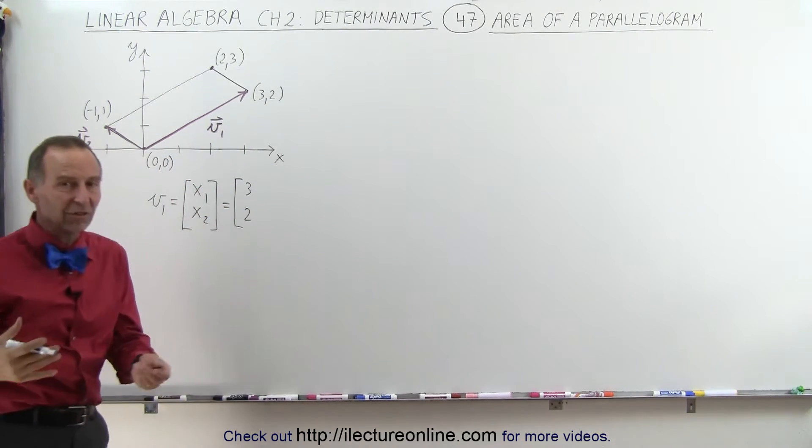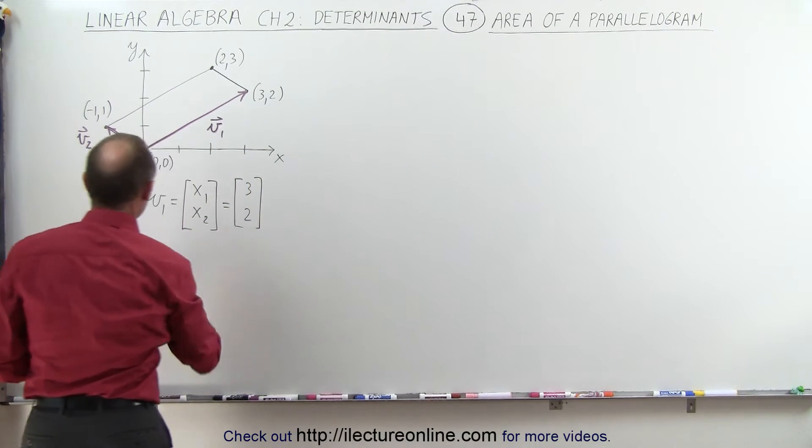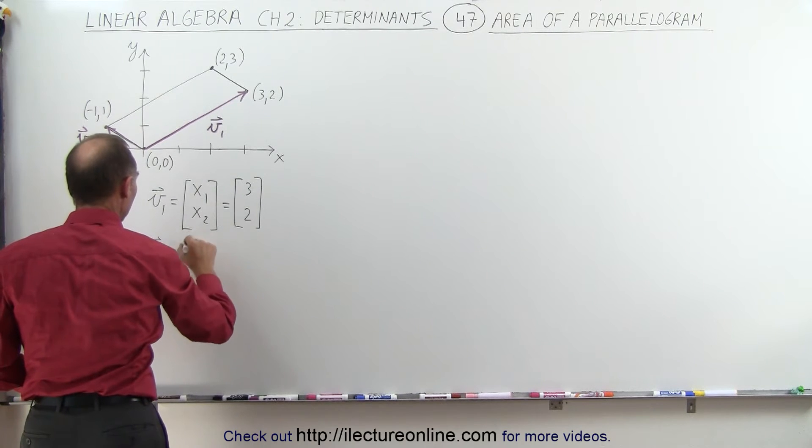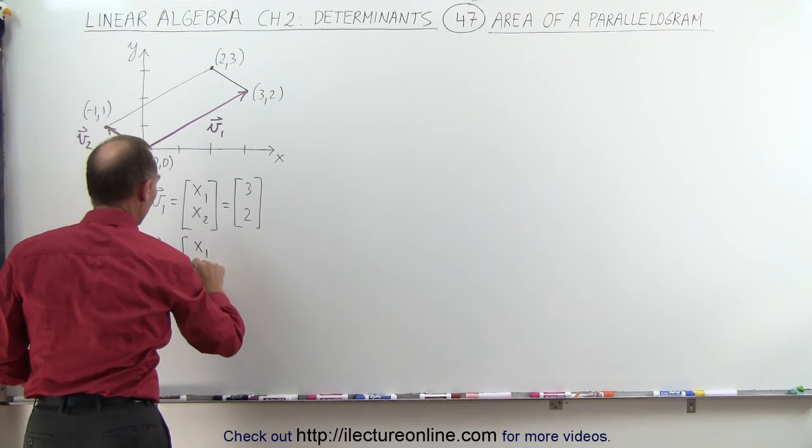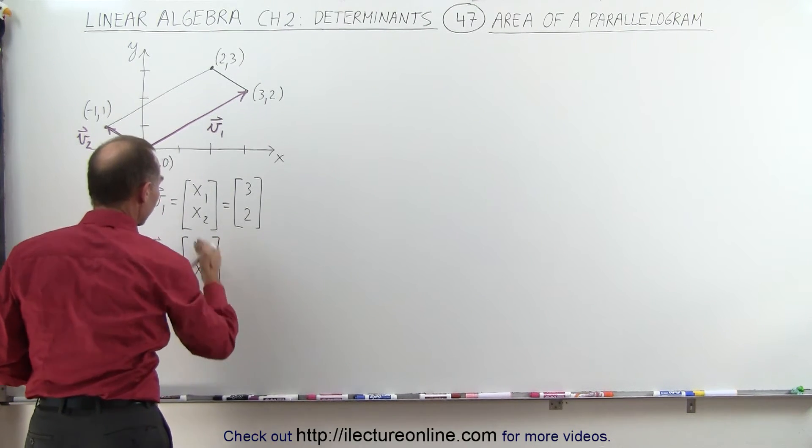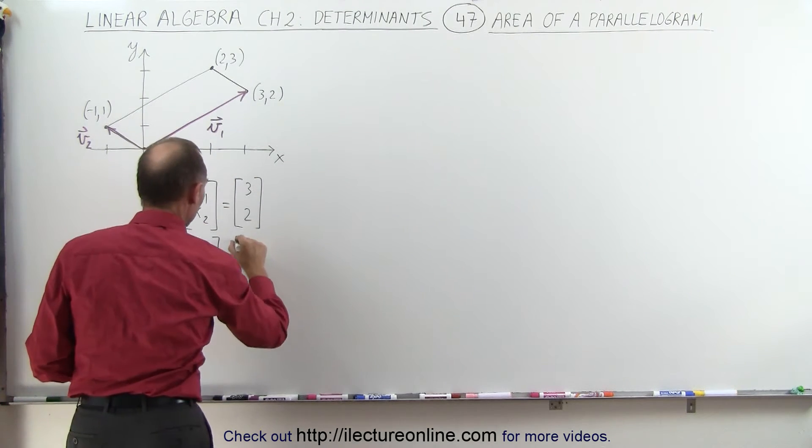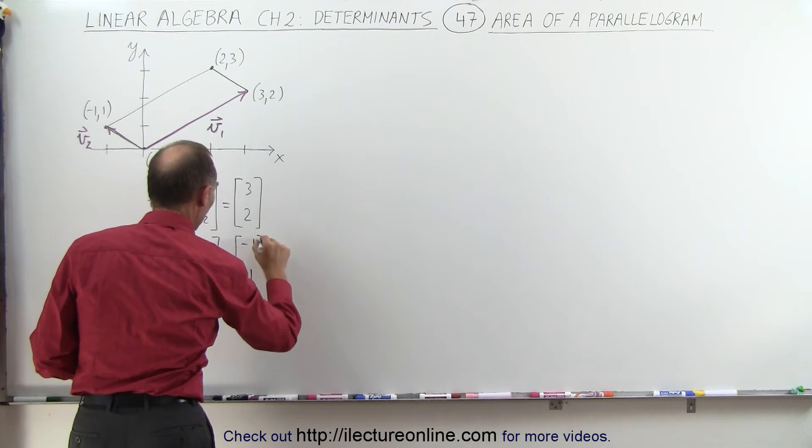So x₁ and x₂ in essence stand for x and y. And vector 2 can be represented as follows: it's equal to x₁, x₂, which are the variables x and y in this case. In that case we would have (-1, 1).